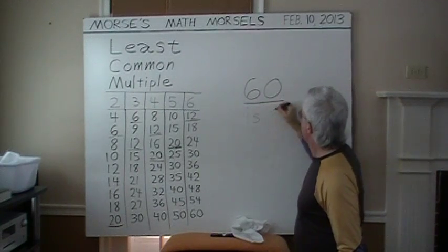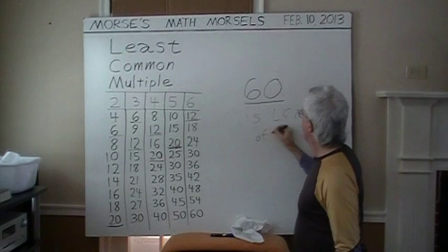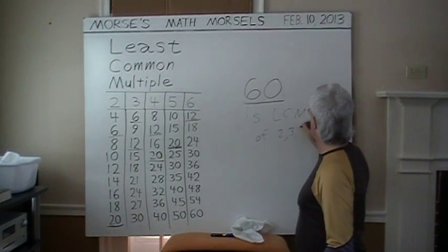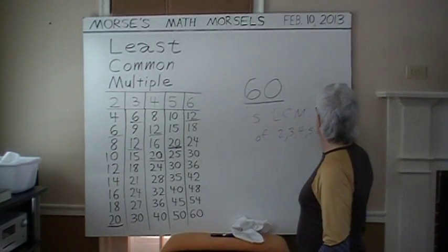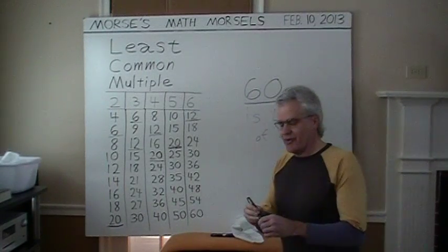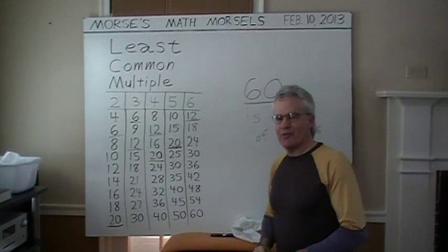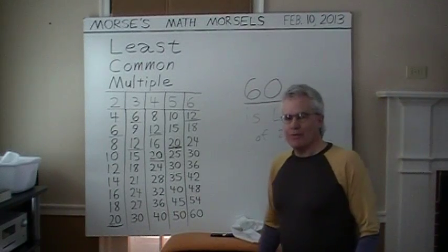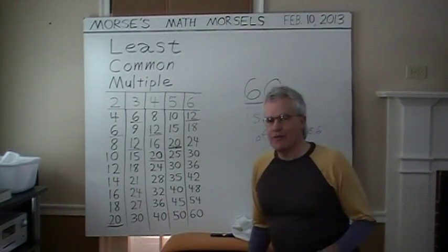Sixty is the LCM of two, three, four, five, six. As for how I knew it was sixty, well, it's an exercise you're free to do yourselves. Thanks for viewing.